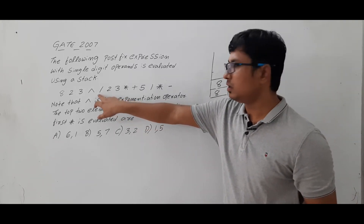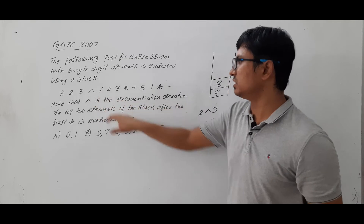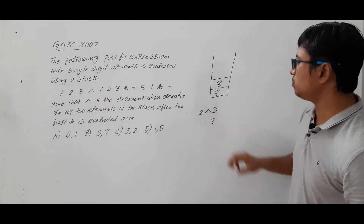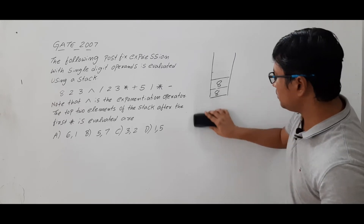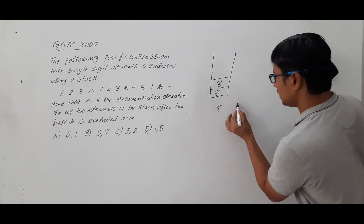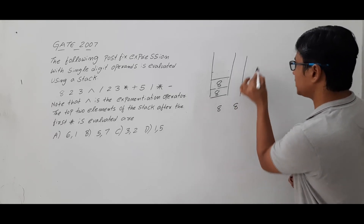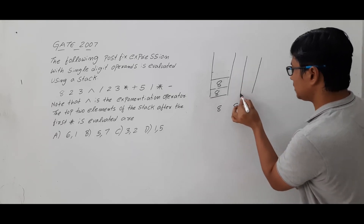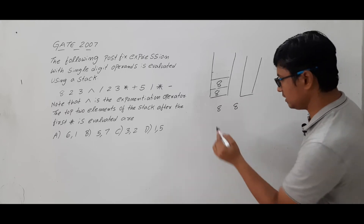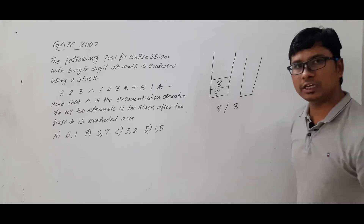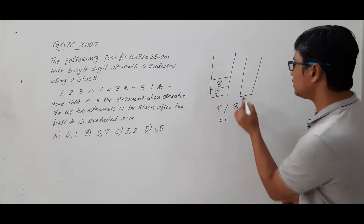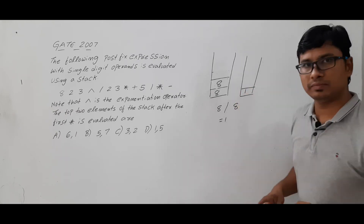Again I got the operator which is division. If it is an operator, I need to pop the top two elements from the stack which are 8 and 8. Now the stack is empty. I perform 8 divided by 8 which equals 1. This result I push into the stack.